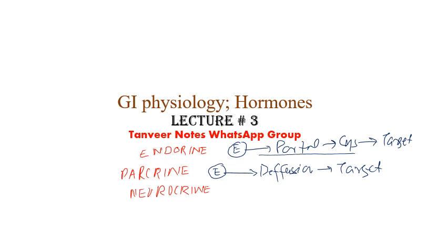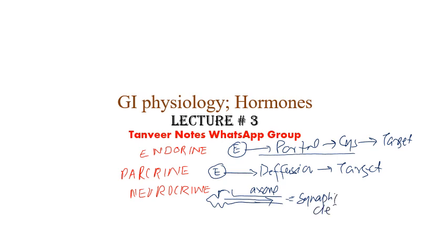Neurocrine hormones are released from neurons. They are first synthesized in the neurons of the GI tract. They move along the axon, and then by action potential they are released into the synaptic cleft, and from the synaptic cleft they act on the target cells. Now it is time to discuss the paracrine and neurocrine hormones in detail.